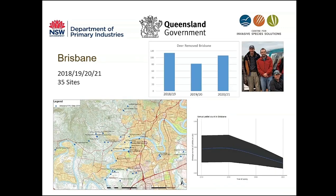The first site where we tested this method was Western Brisbane, where the city council decided to remove Rusa deer from specific suburbs with a target of 100 individuals per year. After three years of control operations, using 35 transects where we counted faecal pellet counts, you can see on the right that the first year the population remained relatively stable, but the activity decreased in the last two to three years, which was a good sign that the control had an impact on the Rusa deer.